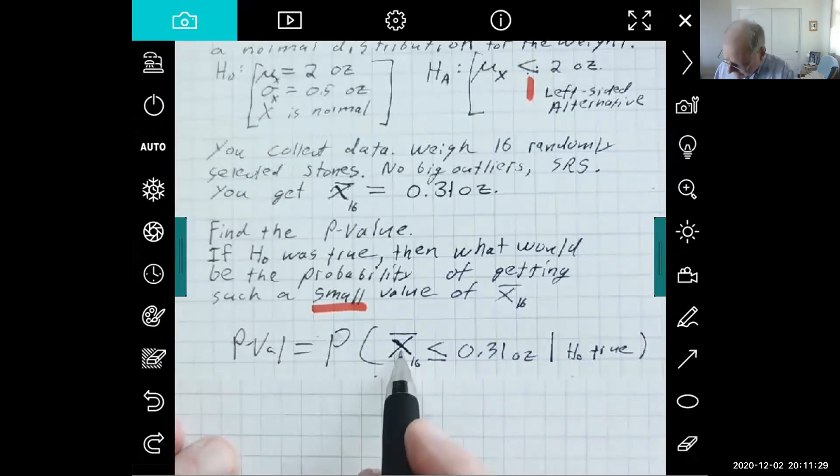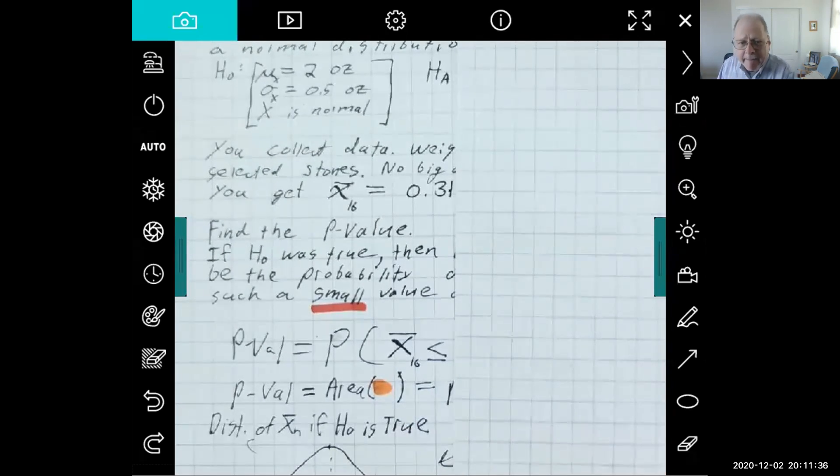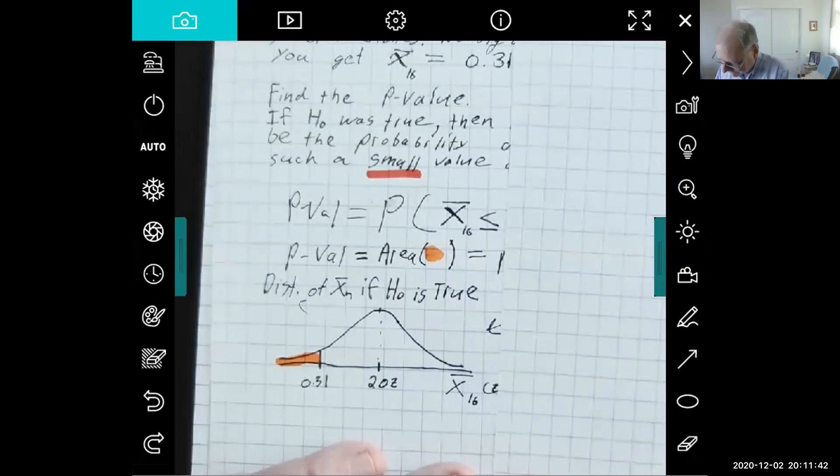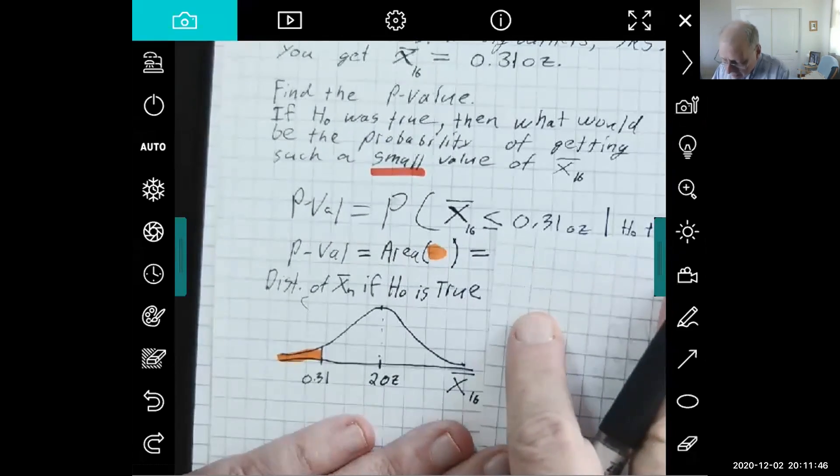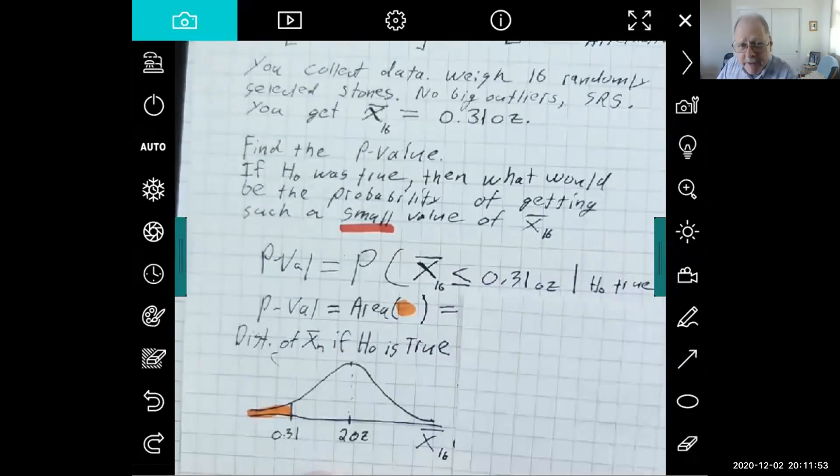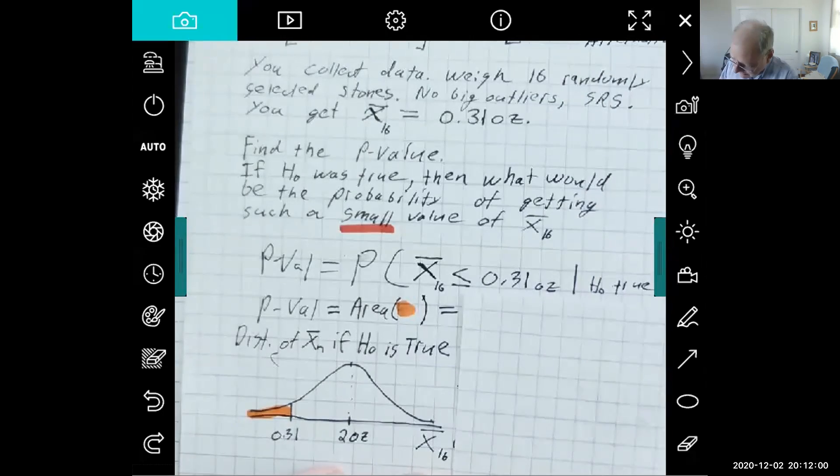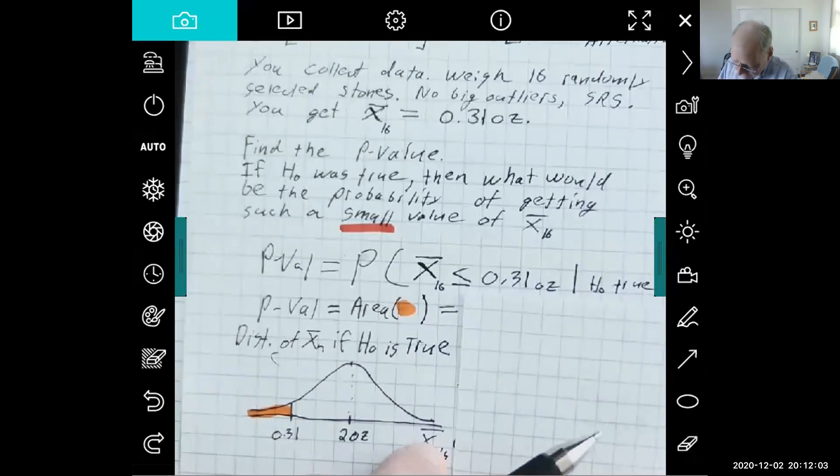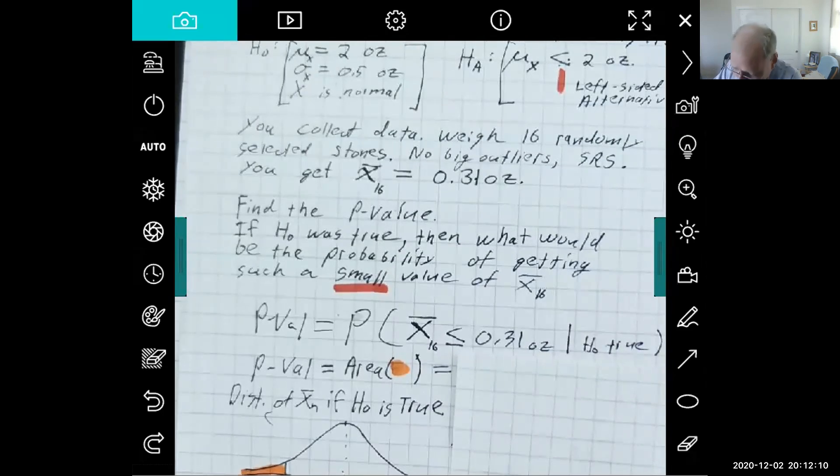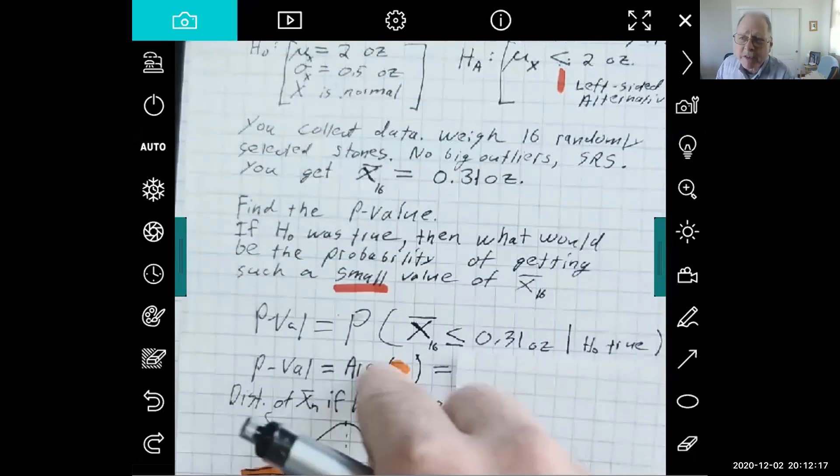Now, how's this x-bar distributed? It's normally distributed because of the central limit theorem. If you have a simple random sample representative of the population, and either x is normal or the sample's big, then the sample mean has a normal distribution. So in our hypothesis, we don't know if the mean distribution is normal or not, but that's the hypothesis we're testing. So if this hypothesis was true, then this would be the shape of the curve.